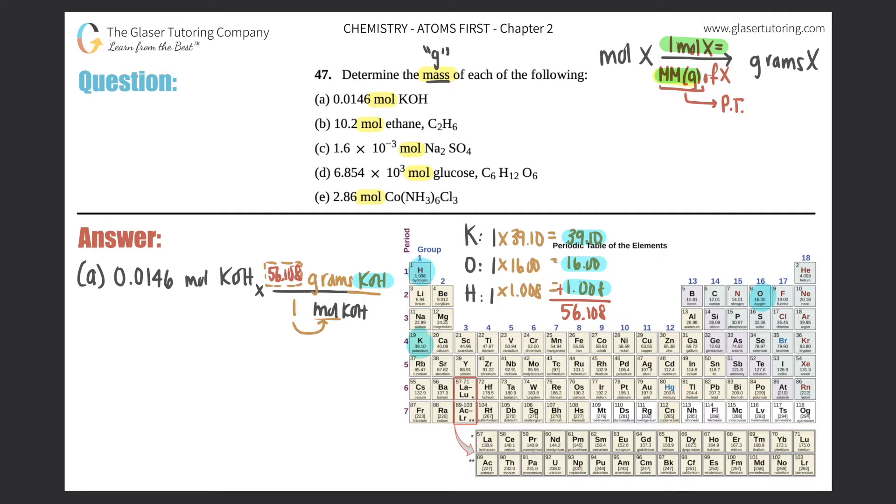That's the number that goes here: 56.108. The word mole cancels out and now it's just a simple conversion. You multiply 0.0146 times 56.108 and you get your answer. We need three sig figs because that's how many we started with in this question, so 0.819 grams of KOH. Box that answer off - that's the answer to the first one.